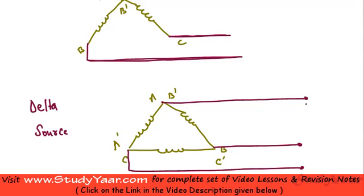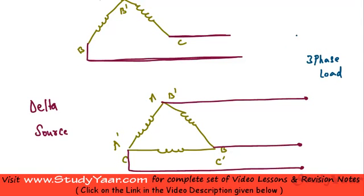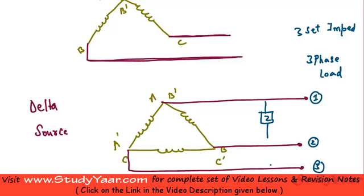Your load is connected between transmission lines. We are looking at a three-phase load, so my load would have three sets of impedances connected across three pairs of lines. If this is line 1, line 2, and line 3, then one impedance is connected across lines 1 and 2, another across lines 2 and 3, and another across lines 1 and 3.